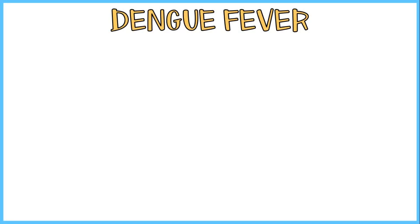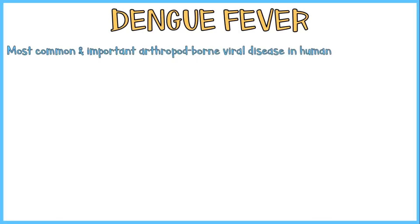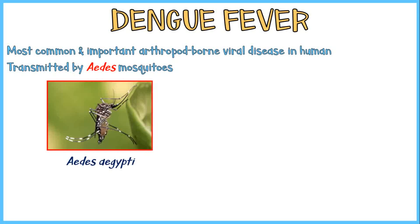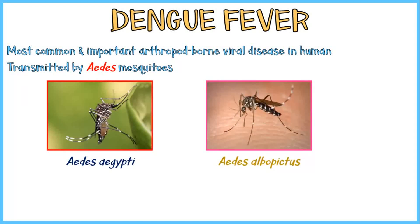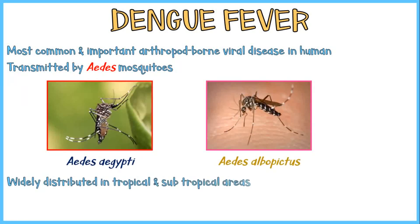Dengue fever is the most common and important arthropod-borne viral disease in humans. It is transmitted by mosquitoes of the genus Aedes. Two species have been identified as vectors of dengue virus: Aedes aegypti and Aedes albopictus. These mosquitoes are widely distributed in tropical and subtropical areas.